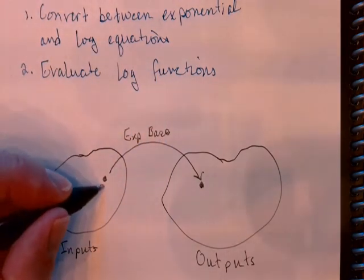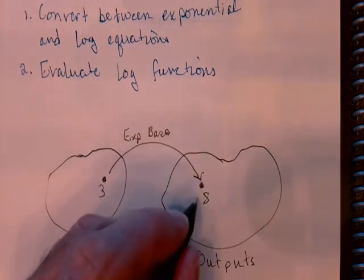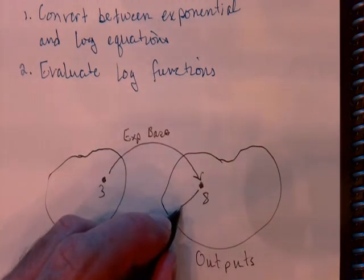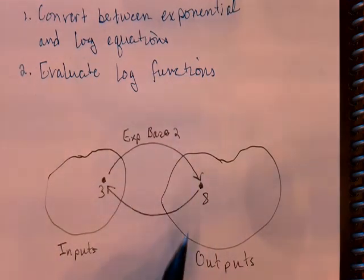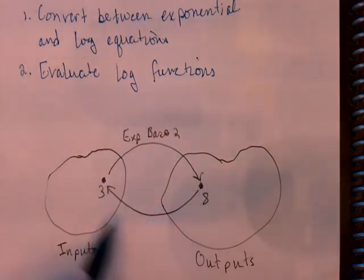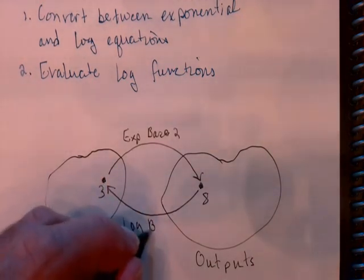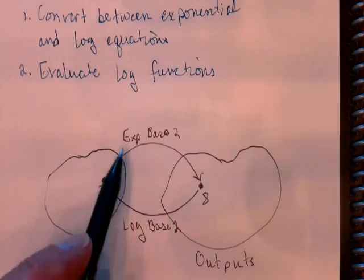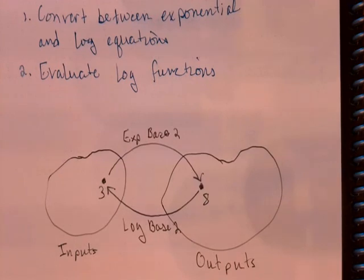So let's say our rule is exponential function base 2. That would take the input value of 3 and give you an output value of 8. And we've been discussing functions the entire course. And recently we've started to discuss the concept of an inverse function. An inverse function is one that starts over here with the output and gets you back to the input. And that's what a log function is. So the inverse of exponential function base 2 is log base 2.